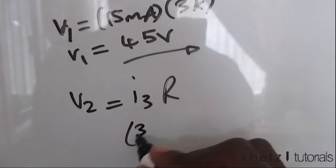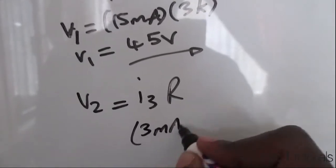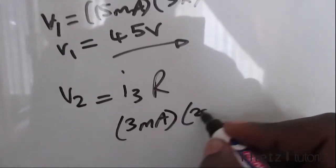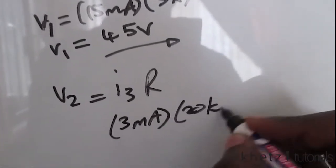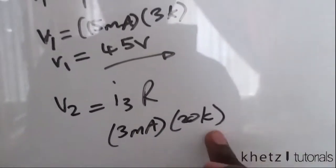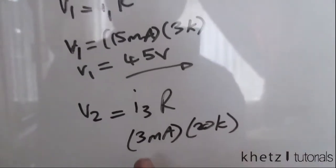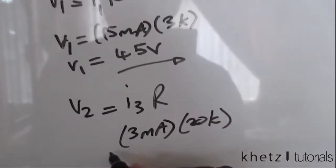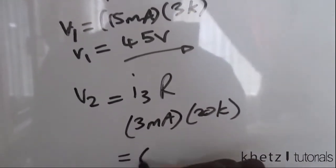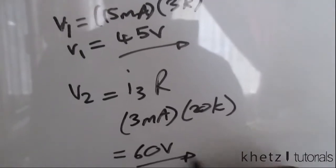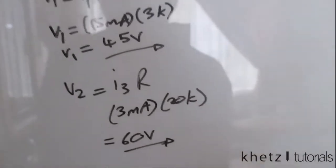Using Ohm's law, V2 = i3 × 20k. i3 is 3 milliamperes and multiplied by 20k — the milli and k cancel out — so 3 × 20 = 60 volts. That is V2.